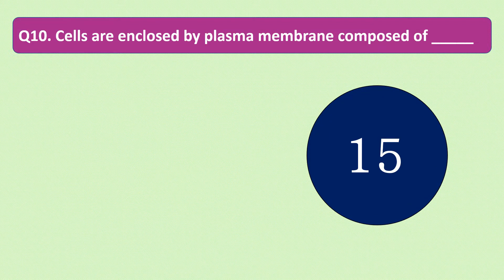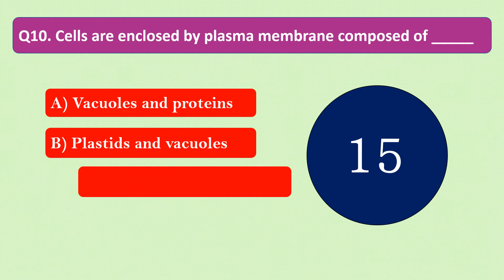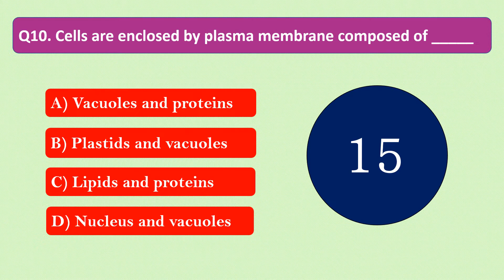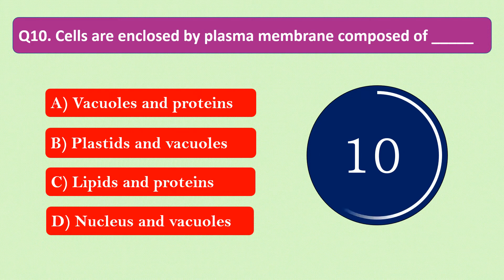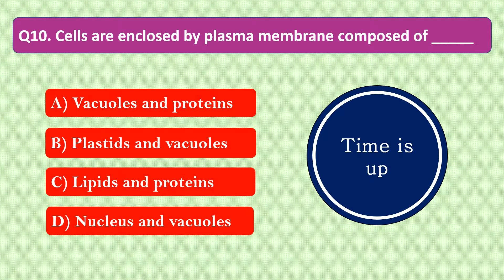Question number 10: Cells are enclosed by plasma membrane composed of dash. The options are A. Vacuoles and proteins, B. Plastids and vacuoles, C. Lipids and proteins, or D. Nucleus and vacuoles. Your time starts now. Your time is up and the right answer is option C: Lipids and proteins. Cells are enclosed by plasma membrane composed of lipids and proteins.